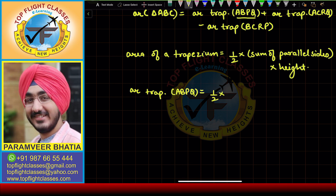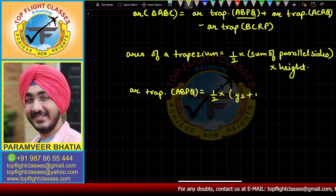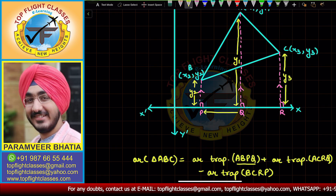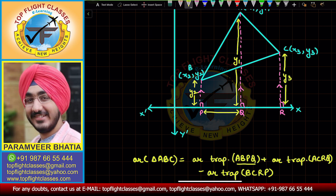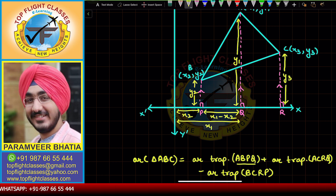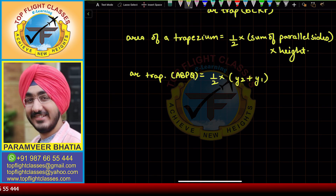The parallel sides are BP with length y2 and AQ with length y1. The height is PQ. If this length is x2 and this whole length is x1, then height PQ equals x1 minus x2. So the area of trapezium ABPQ is half times (y2 + y1) times (x1 − x2).